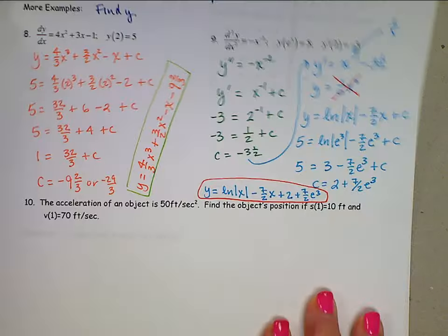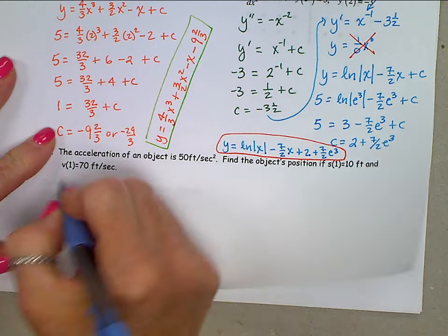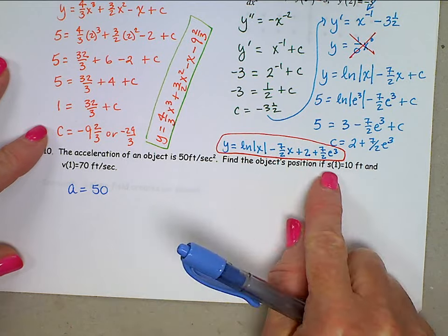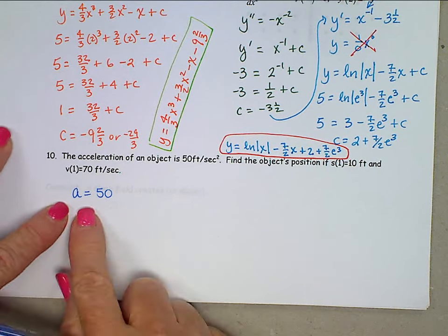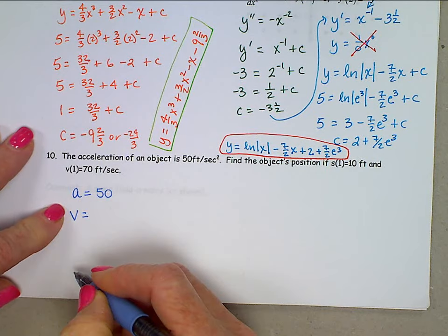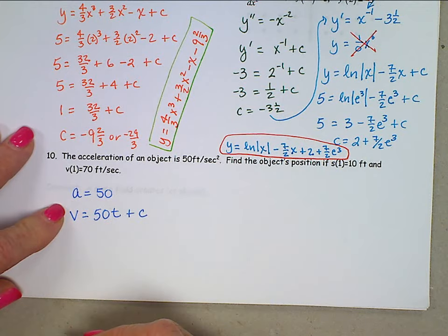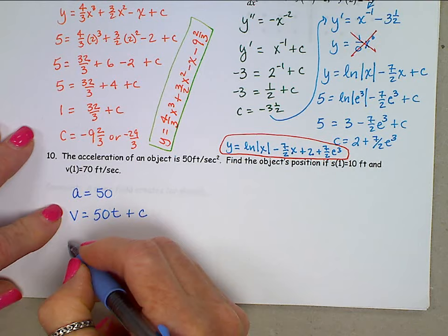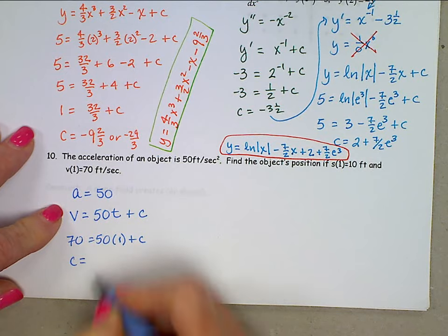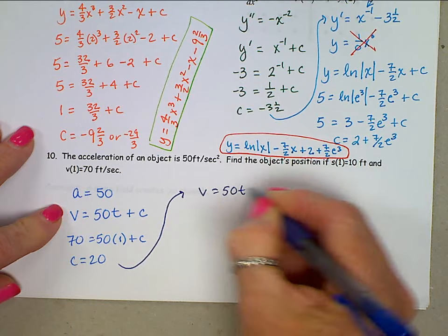Okay, last one, the acceleration of an object is 50 feet per second squared. Find the object's position if s of 1 is 10 and v of 1 is 70. All right, acceleration is 50. Acceleration is the derivative of velocity. So velocity is the antiderivative of acceleration. And the antiderivative here is 50t, we're in time, plus c, plugging in this initial condition for velocity. So velocity, 70 is 50 times 1 plus c, which tells us that constant is 20.